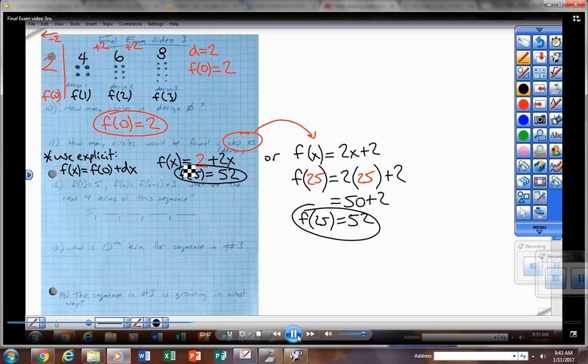All right, problem number 12. They're having you find the next four terms using the recursive pattern, which means using the number before it and the math that you're doing to get the next term. So the first term in the sequence is 5. I'm going to multiply by 3 each time. So to find that second term, take 5 times it by 3, that gives me 15. To find that third term, take that number before it, 15 times by 3, gives me 45.